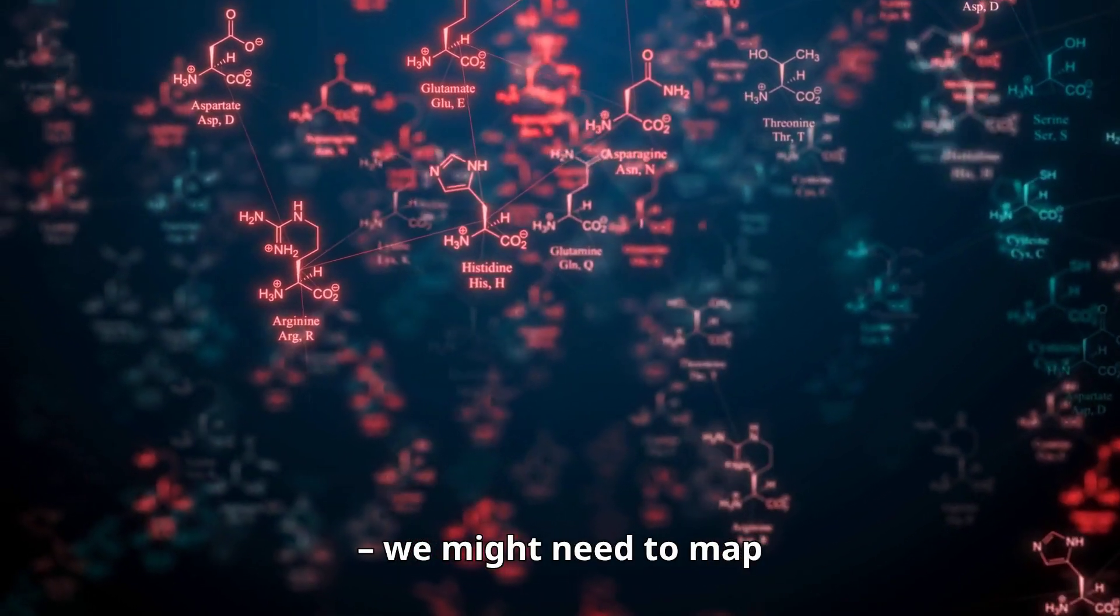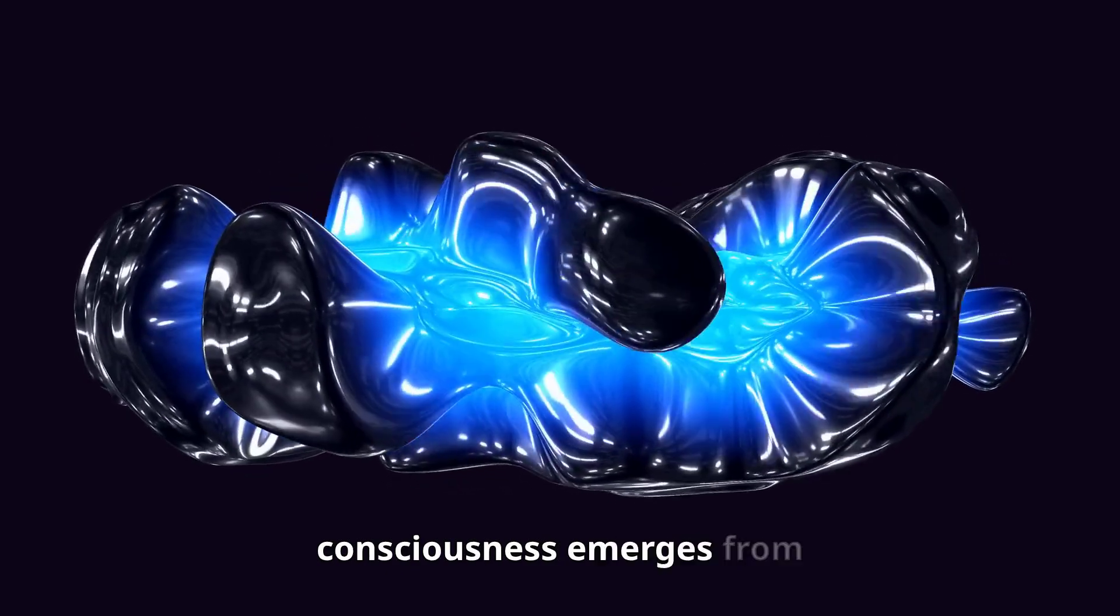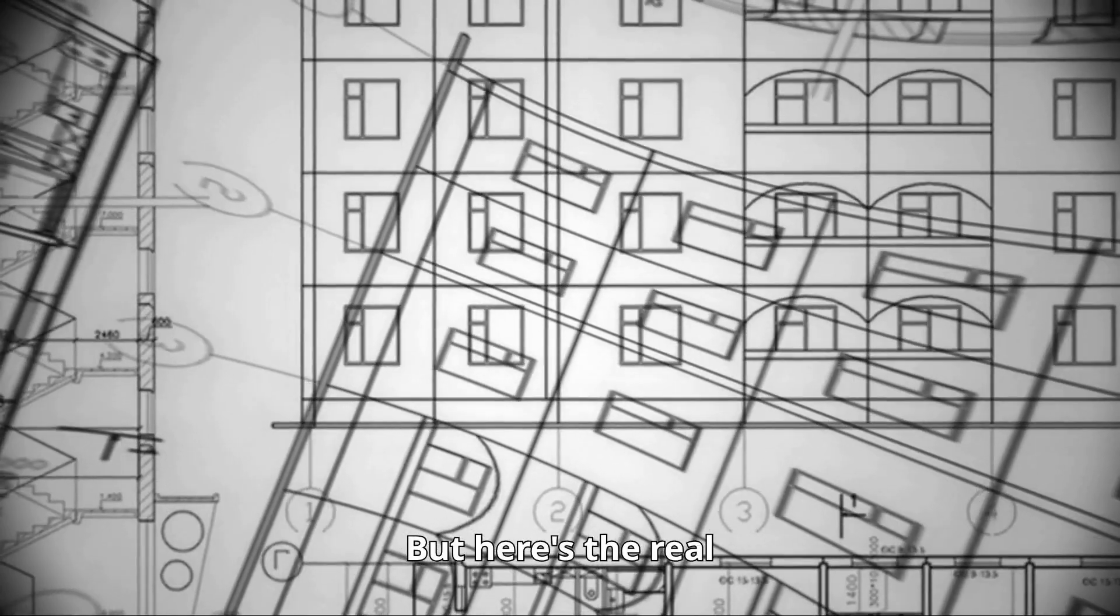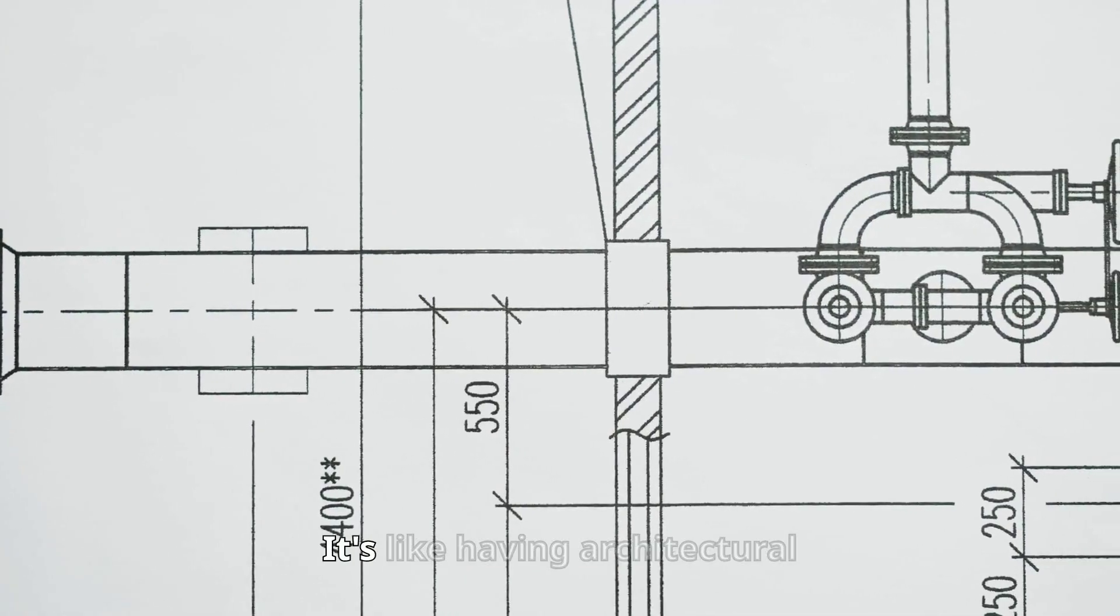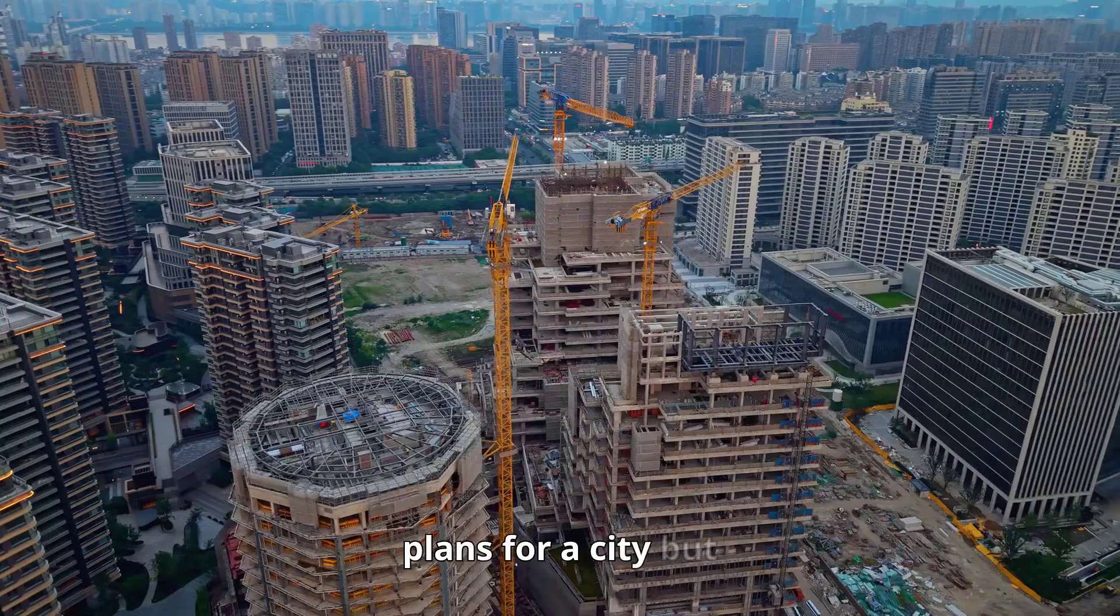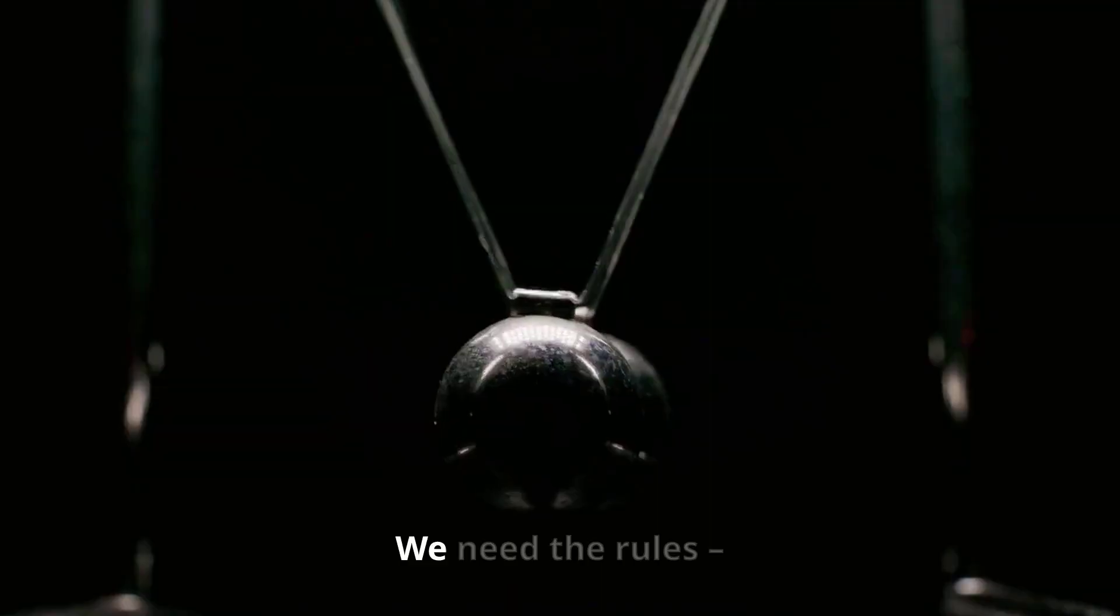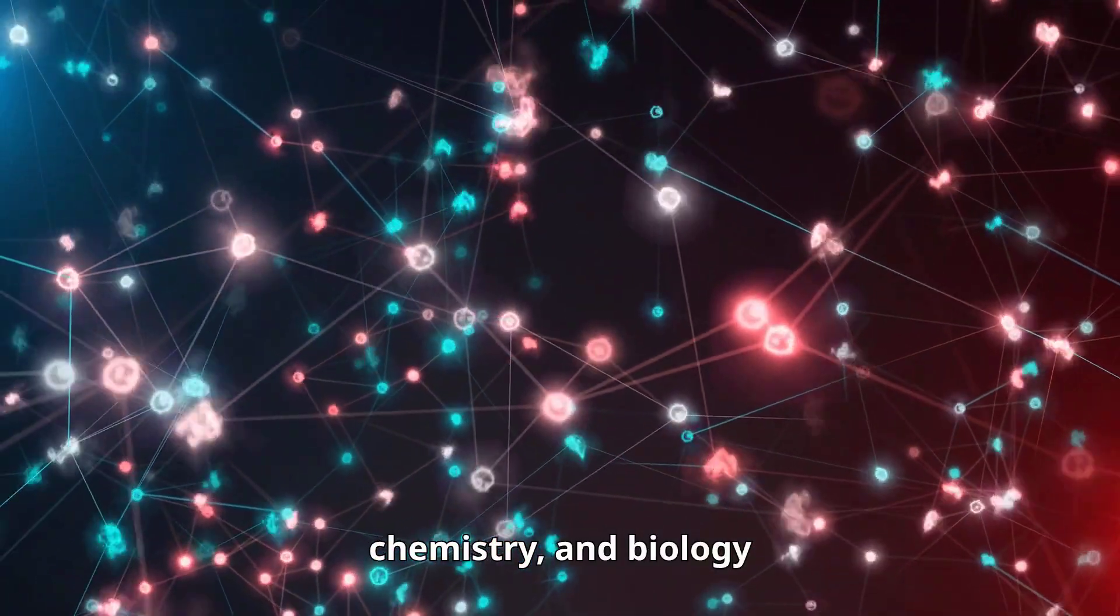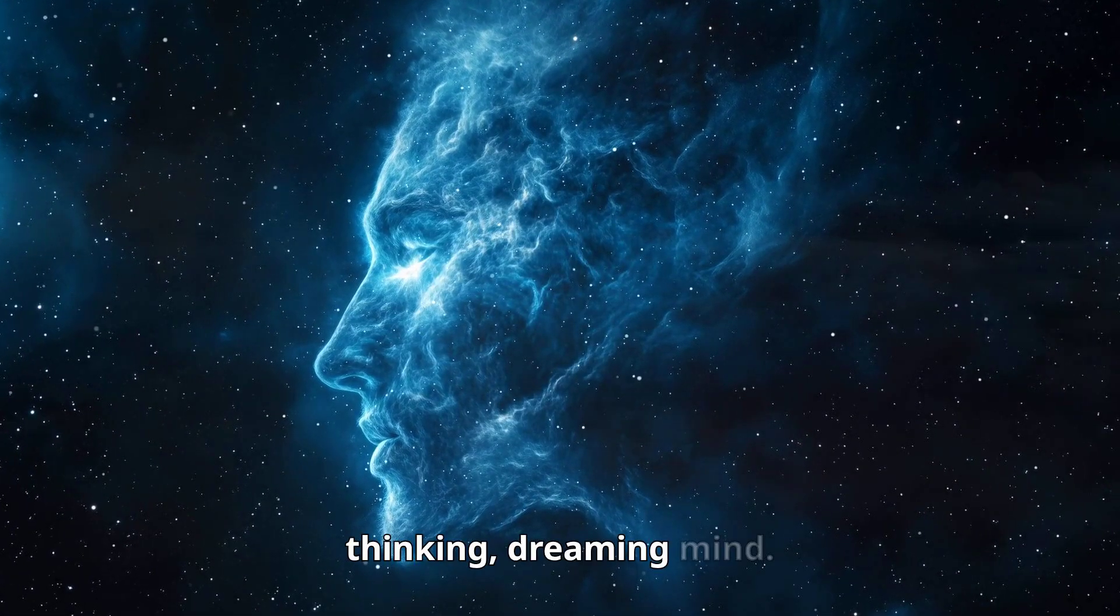We might need to map individual proteins or molecules to truly understand how consciousness emerges from biological chaos. But here's the real challenge. Even with a perfect brain map, we'd still just have a static blueprint. It's like having architectural plans for a city, but no idea how to make it come alive. We need the rules, the laws of physics, chemistry, and biology that transform static structure into living, thinking, dreaming mind.